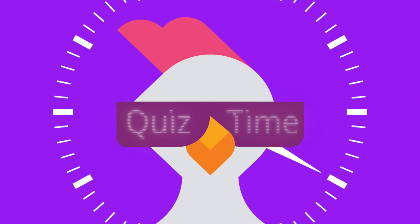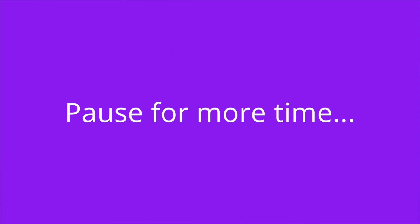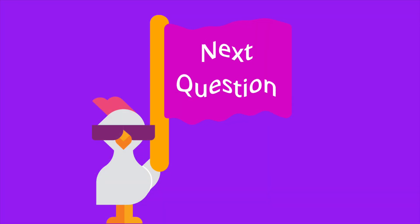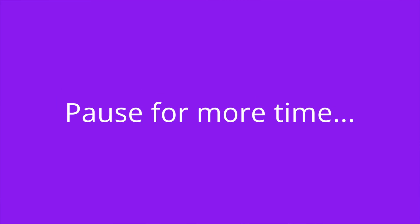It's quiz time and I have three questions for you. Question one: The use dilution test is used to determine the effectiveness of an antimicrobial drug on living tissue — true or false? The answer is false. It's used to evaluate the effectiveness of a disinfectant on inanimate surfaces. Question two: With the disc diffusion method, what is the zone of inhibition? The answer is it's the clear area around the disc where bacterial growth has been inhibited.